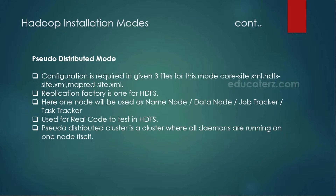The next one is pseudo distributed mode. In pseudo distributed mode, all the daemons — like data node, name node, and two additional daemons such as job tracker/task tracker or resource manager/node manager — all will be available and running on a single machine. The replication factor is also one, and you typically see this kind of setup in training environments, test environments, and small development environments.